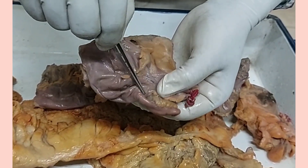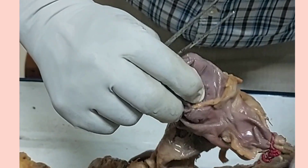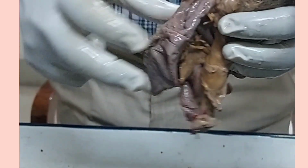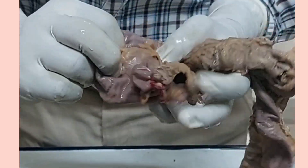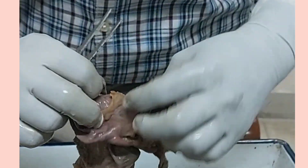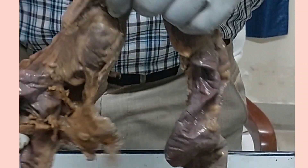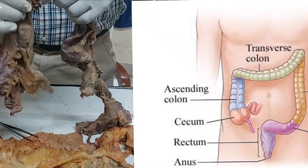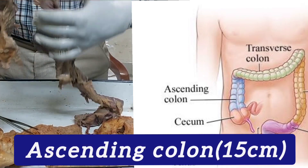So the appendix is below the ileocecal orifice. This is the cecum, this is the terminal part of the ileum, and this is the appendix — it will be on the right side. The next part is the ascending colon, which is about 15 centimetres in length.